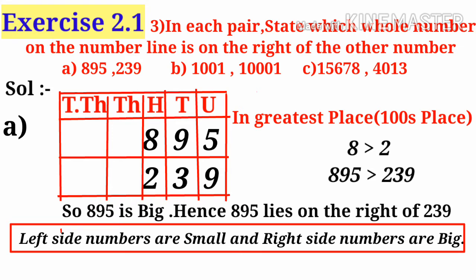Therefore, first number 895 is greater than 239, so 895 is big, hence 895 lies on the right side of 239.